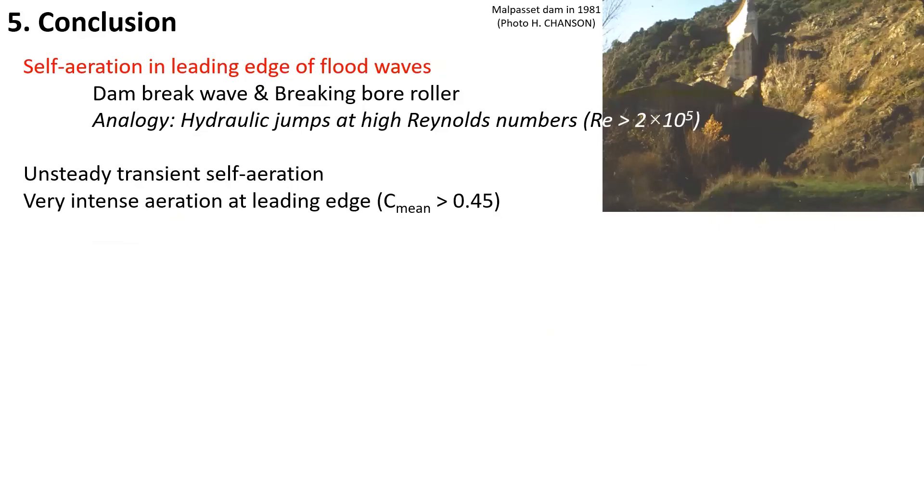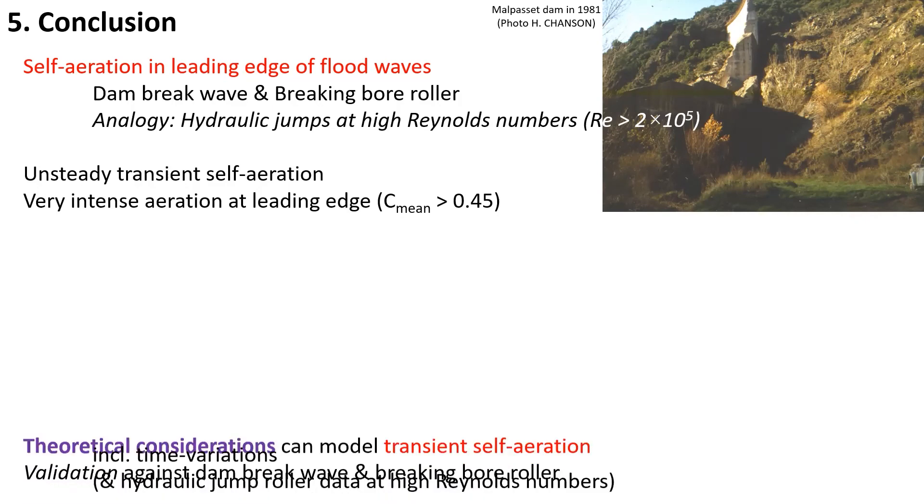Let us summarize the key takeaways and key messages. We looked specifically at self-aeration at the leading edge of surge waves, including dam break waves and breaking bore rollers, although it may also be relevant to hydraulic jumps at high Reynolds numbers. We highlighted an unsteady transient self-aeration with very intense aeration at the leading edge.